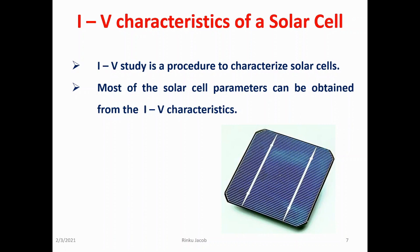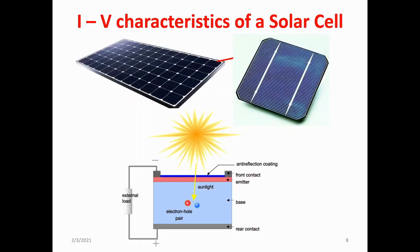Photovoltaic solar cells convert the sun's radiant light energy directly into electricity. Photovoltaic cells are made almost entirely from silicon that has been processed into an extremely pure crystalline form that absorbs the photons from the sunlight and then releases them as electrons, causing an electric current to flow when the photoconductive cell is connected to an external load. There are a variety of different measurements we can make to determine the solar cell's performance, such as its power output and its conversion efficiency.